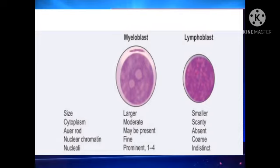If you identify myeloblasts in the peripheral smear and they are more than 20% in number, it is called acute myeloid leukemia. If you see lymphoblasts in the peripheral smear and they are more than 20%, then it is acute lymphoblastic leukemia. To summarize: myeloblast is larger in size with moderate cytoplasm and you will find Auer rods; lymphoblast is smaller with a scant rim of cytoplasm, no Auer rods, and no prominent nucleoli.